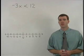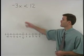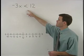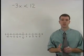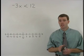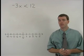When you're asked to solve an inequality like negative 3x is less than 12, your goal should be the same as it was when solving equations: to get x by itself on one side.